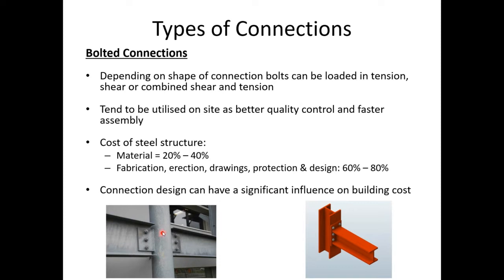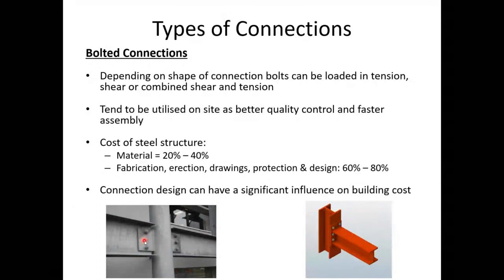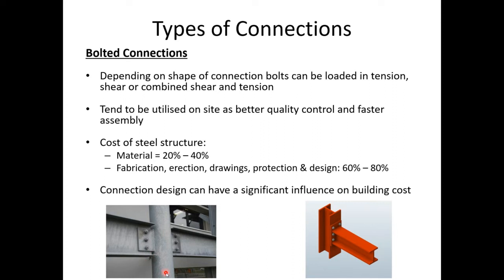On site, members are bolted together. The column arrives from the factory with fin plates already welded on. The beam arrives with holes pre-drilled or punched for the bolts. On site, the beam is lifted into place and an operative inserts the bolts, fits the nuts, and tightens everything up. This is why welded connections are done in the factory and bolted connections are made on site.